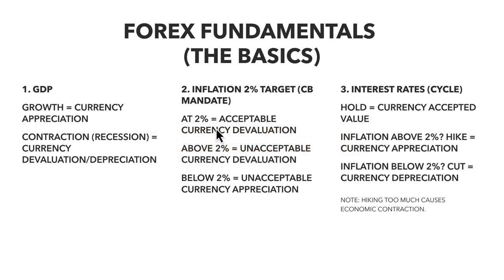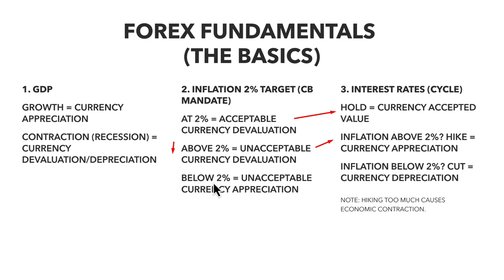When inflation is at the acceptable 2% level, central banks will typically hold rates. If inflation starts to rise above the 2% target and continues rising, they need to get inflation back down — so they are likely to hike rates. Inflation above 2% equals a hike, which leads to currency appreciation to counter currency devaluation. If inflation is below 2%, central banks will cut rates to depreciate the currency and counter unacceptable currency appreciation.